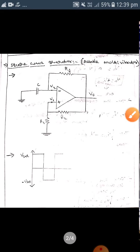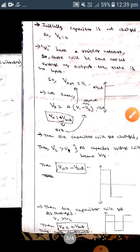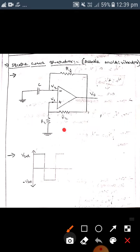Let me tell you, initially the capacitor is not charged. As the capacitor is not charged, then V2 will be equal to zero. And here V1 has a resistor network, so the same V1 will come as output here.